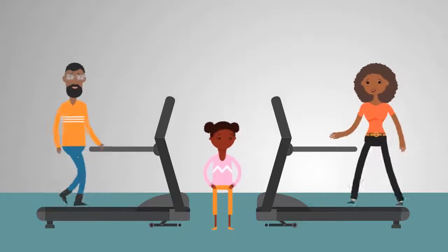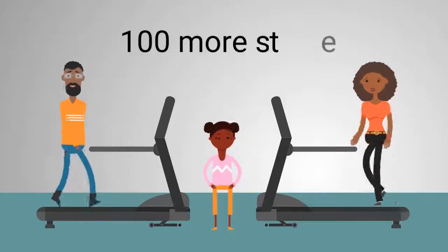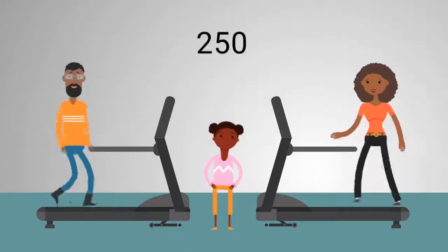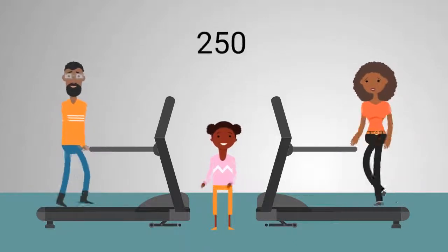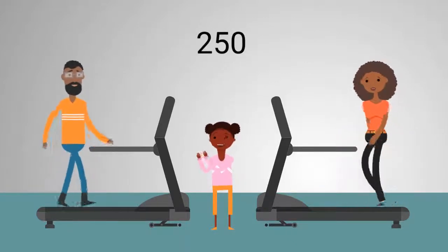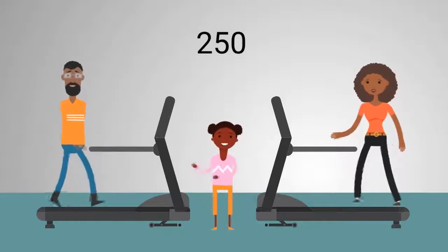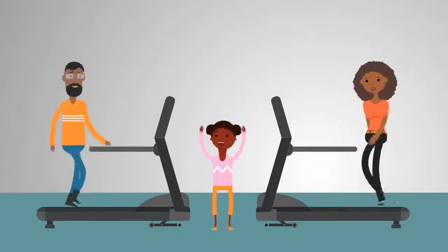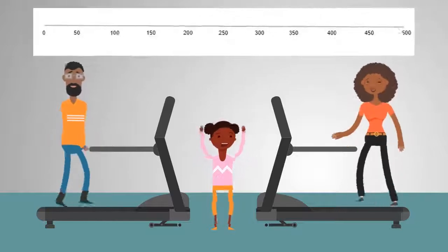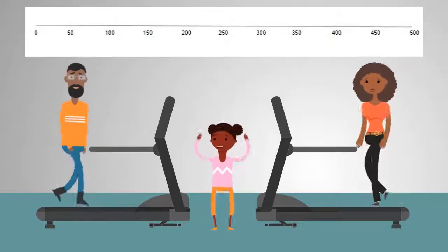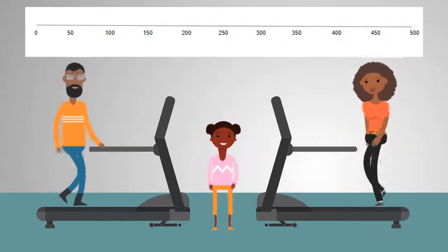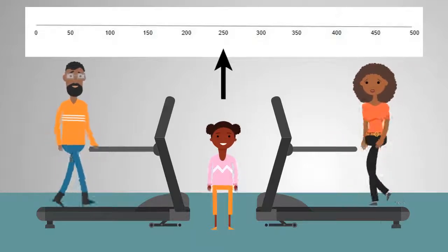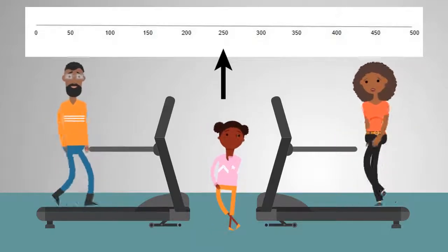Their goal is to walk 100 more steps each day. Yesterday, they walked 250 steps. Let's use our number line to find out what is 100 more steps. This number line is counting by 50s. It starts at 0 and goes to 500. Do you know what 100 more than 250 is?